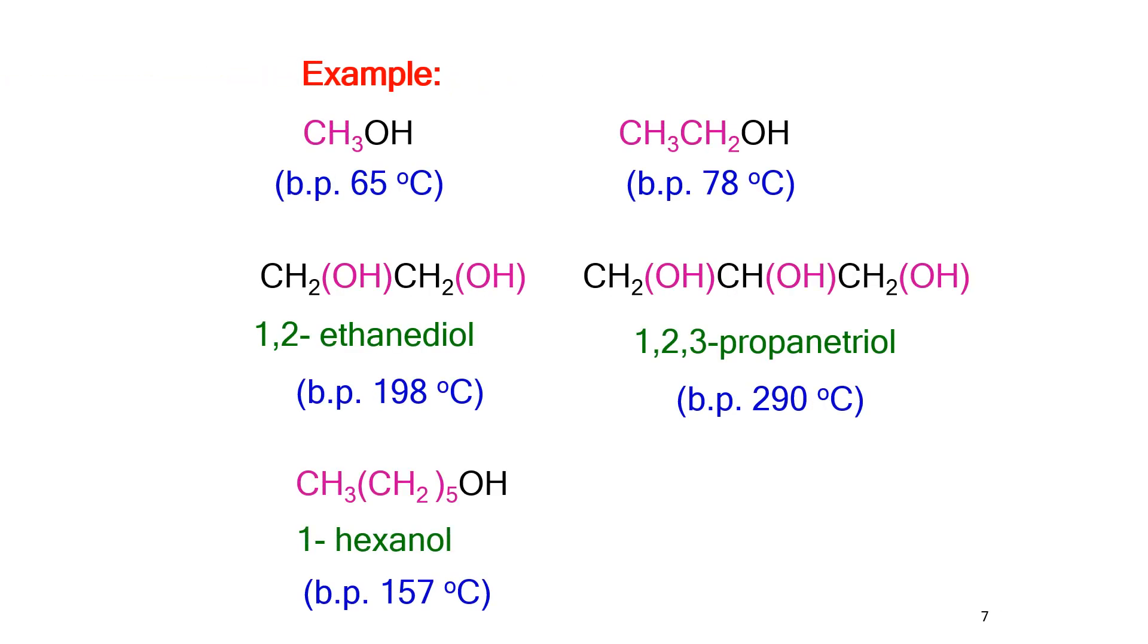Here are given few examples of alcohol which has the variation of boiling point. With the increase number of carbon will increase boiling point as well as the increase number of OH group also will increase the boiling point.